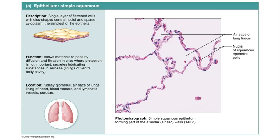Simple squamous epithelium is a tissue composed of a single layer of flattened cells. The cells in this tissue are extremely thin, which makes this epithelial tissue ideal in places where diffusion occurs, and its locations in the body reflect this.